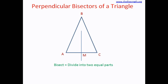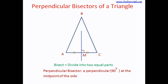But the title says perpendicular bisectors. That means we need to have a bisector which is perpendicular to the side AC. If you see this line segment that I have drawn here, it is at 90 degrees with the side AC. That means it is perpendicular to the side AC and it is at the midpoint of the side AC. That means it is a bisector — so it is a perpendicular bisector. A perpendicular at the midpoint of the side is a perpendicular bisector of the side.